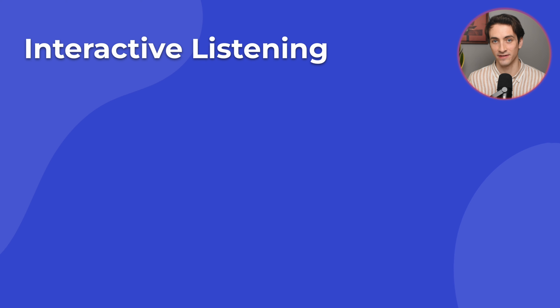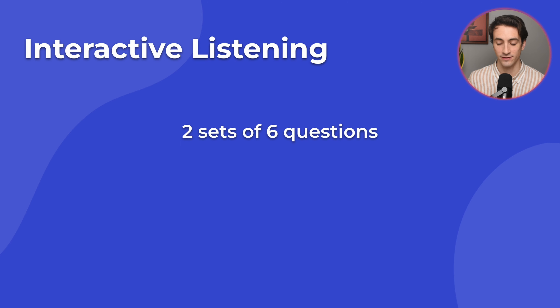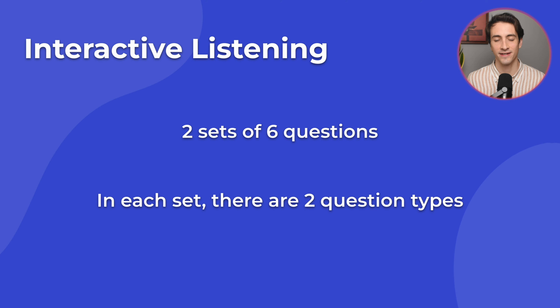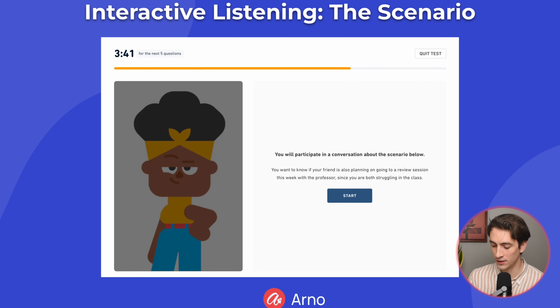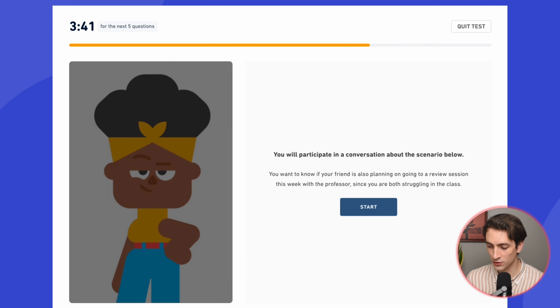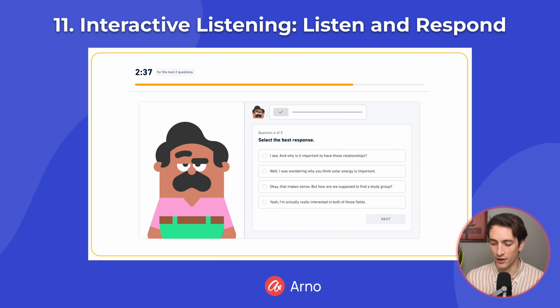Next, you will have Interactive Listening. Like Interactive Reading, you will have two sets of six questions, but in each set, there are only two question types. Interactive Listening simulates a conversation with another person. Each interactive listening set of questions begins with an explanation of why you are talking to somebody. In this example, you want to know if your friend is also planning on going to a review session this week with the professor, since you are both struggling in the class. You will then answer a number of listen and respond questions. The other person will say something, and then you have to pick the best response.